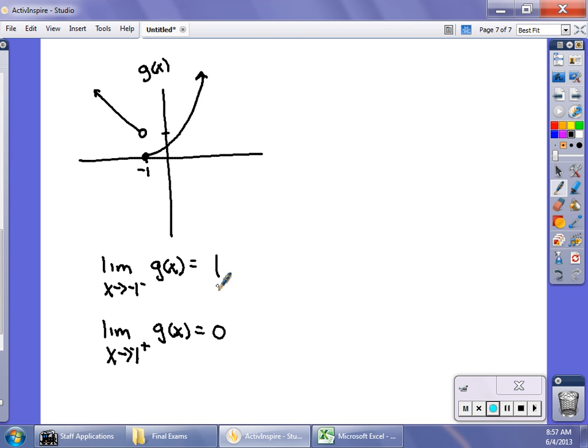If I do it this way, the limit as x approaches negative 1 from the right of g of x, that's going to converge to 0. Because as I go on this side from the right, it's going down to 0. So that means since these are not equal, if I had the limit as x approaches negative 1 of g of x, not from either side, this does not exist. These must be the same value for the limit to exist. Those must be the same value for the limit to exist.